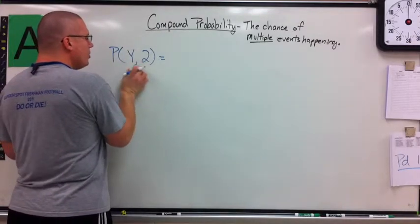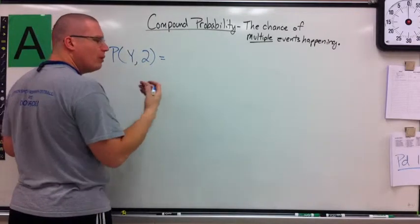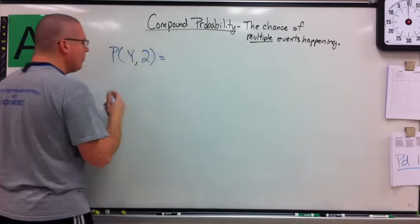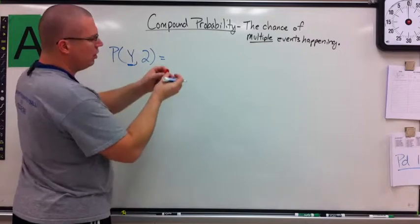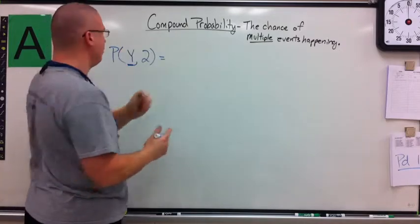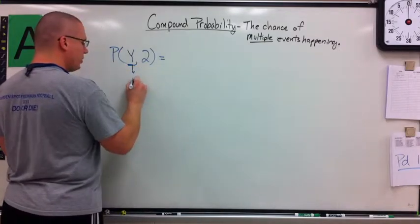What we can do is look at that individually, and then we'll work to put them together. What we're going to do is underneath each one, we're going to put its own individual probability. So, probability of flipping a yellow. Well, we know there's one yellow out of two different ways it can land. So this is one-half.